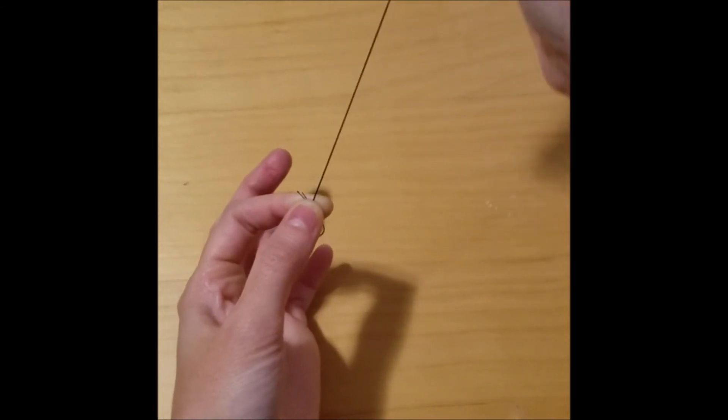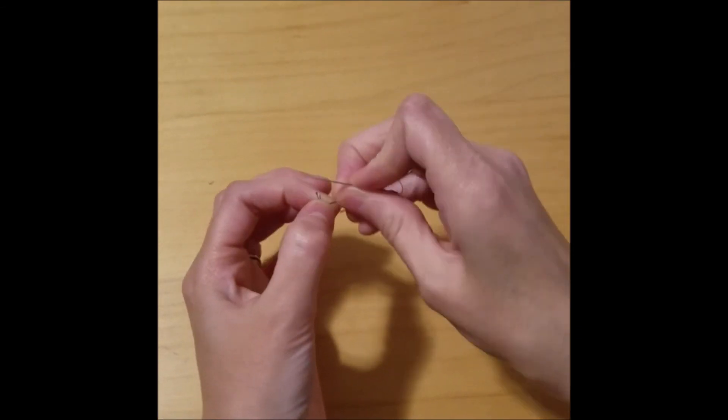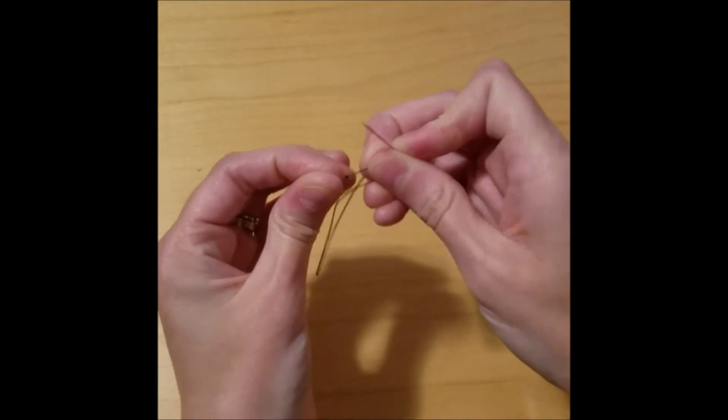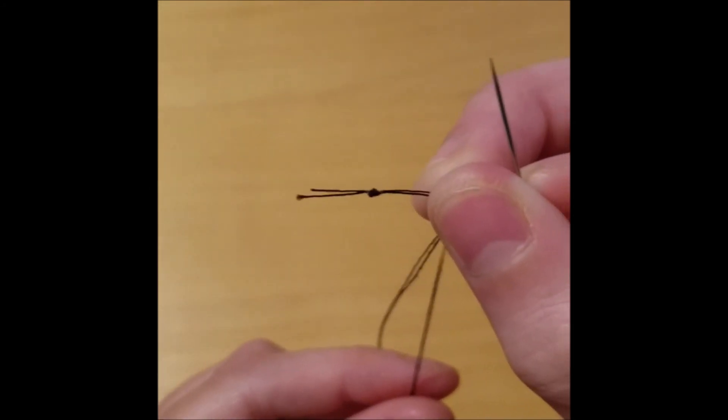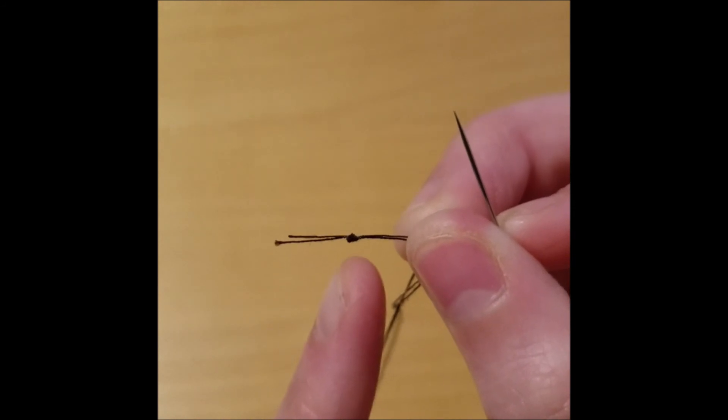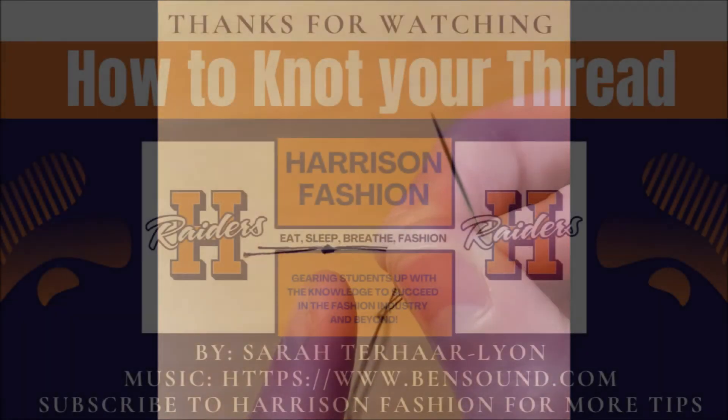I pull it all the way down to the bottom and then that creates a beautiful knot at the end where I've got about three knots all right on top of each other perfectly.